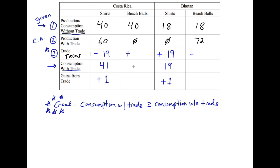Now let's move on to beach balls. Costa Rica was able to produce 40 beach balls by themselves, but they decided to specialize in shirts, so now they're producing zero beach balls — meaning they need to gain at least 40 to be as well off as before. They'll get those from Bhutan. By themselves, Bhutan could consume and produce 18 beach balls, but when they specialize they can produce 72 — that's 54 more. So they can give away at most 54, and Costa Rica needs at least 40. We can pick a number between 40 and 54.